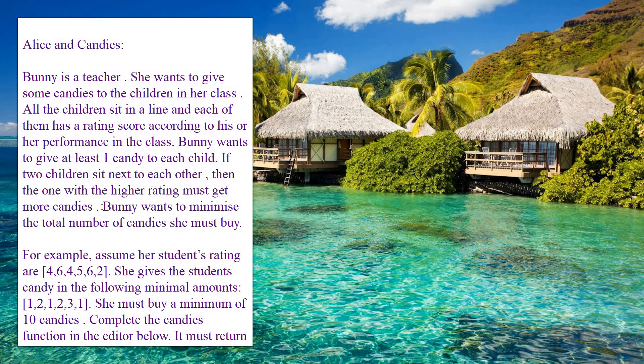Bunny wants to give at least one candy to each child. If two children sit next to each other, then the one with the higher rating must get more candies. She wants to give candies based on the ratings given to the students based on their performance, giving more candies to the child with a higher rating than their neighbor.